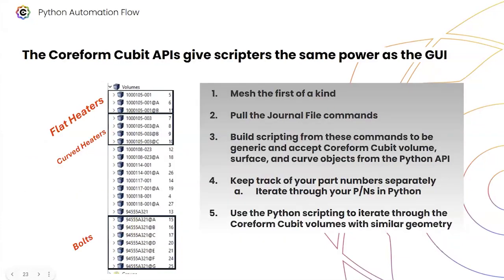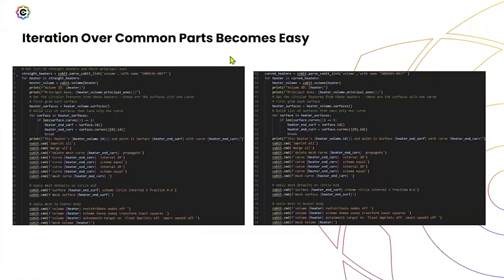I would do the exploratory work to find out what these part numbers are, document them in the input CSV, and then run them through the Python script. I'd mesh the first-of-a-kind — for example, I'd mesh a heater, pull the journal file commands, build the scripting from them, put the part numbers into the input file, and then iterate through using Python flow control.